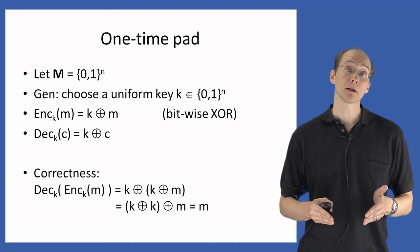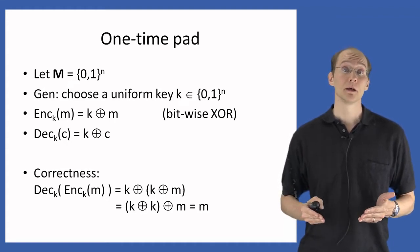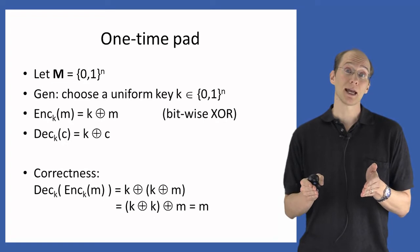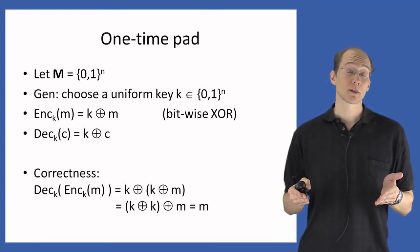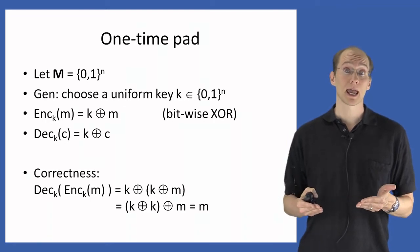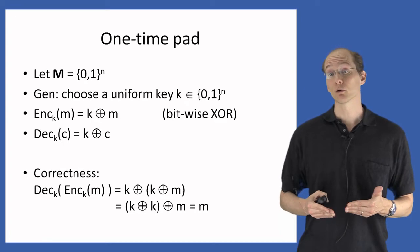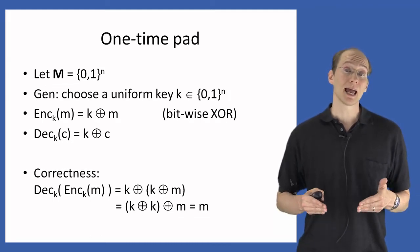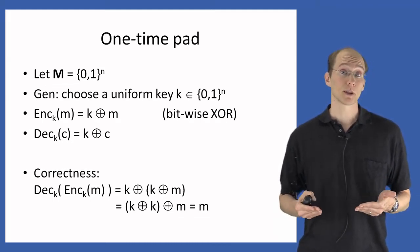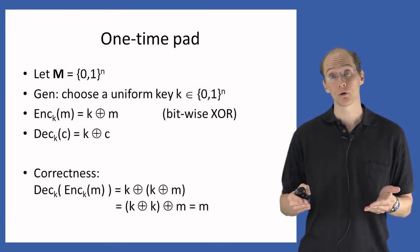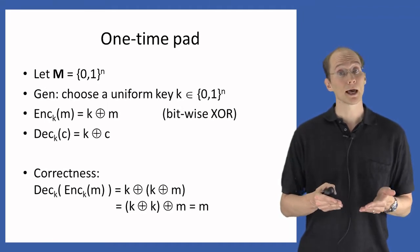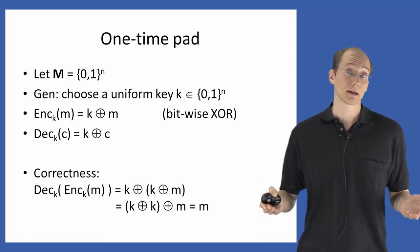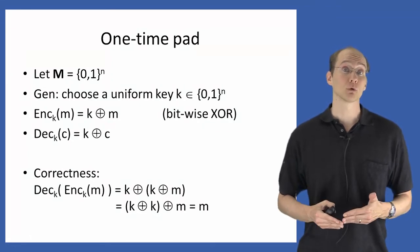The decryption using key k of the encryption of m using key k works as follows: the encryption of m using k is just k XOR m. Decryption XORs k with that. Because XOR is associative, we can rewrite this as (k XOR k) XOR m. Any string XOR'd with itself equals the zero string — since 0 XOR 0 = 0 and 1 XOR 1 = 0. The zero string XOR'd with m simply gives back m itself. This shows that decryption does indeed recover the original message.